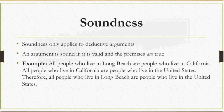Here's an example. All people who live in Long Beach are people who live in California. All people who live in California are people who live in the United States. Therefore, all people who live in Long Beach are people who live in the United States. This argument is sound because it is valid — if we put Long Beach inside California and California inside the United States, it necessarily follows that people in Long Beach also live in the United States. And we know the premises are true, so this is a sound argument.